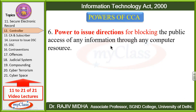The sixth point is power to issue direction for blocking the public access of any information. Kisi particular computer se public information na le sake — controller iske liye us particular computer ko block karne ke directions de sakta hai taaki public information na le sake.